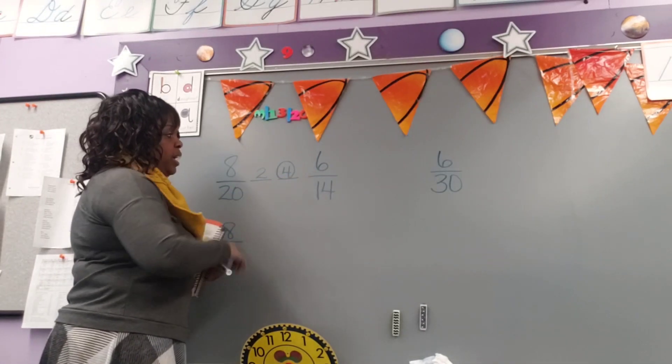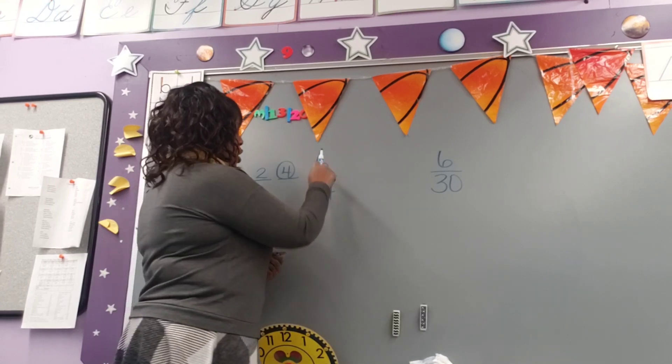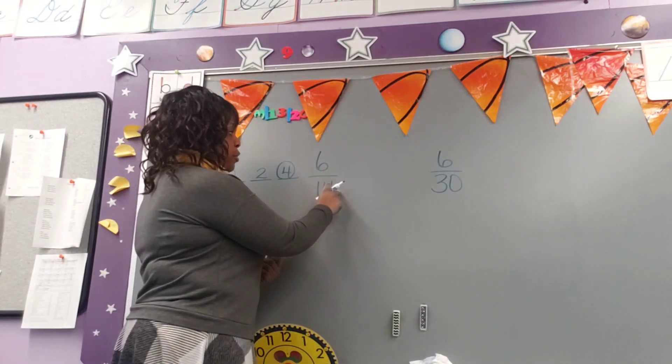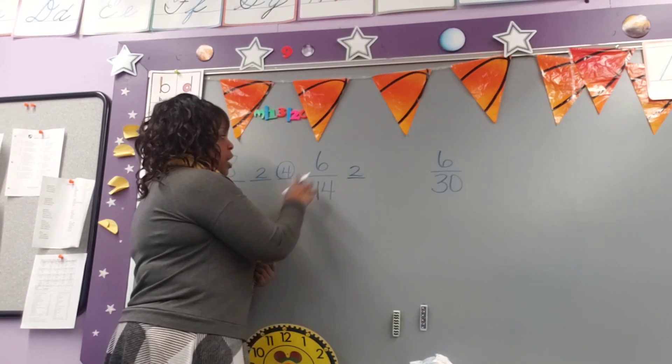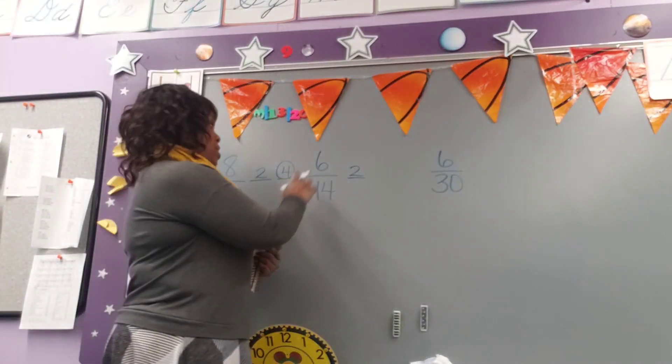So then when we come over to 6/14, we're doing the same thing, thinking starting with 2. Can I divide both numbers by 2? Well, of course, they're both even numbers, so I can divide them by 2 to start. 3, I can divide my numerator, but not my denominator. 4? No.